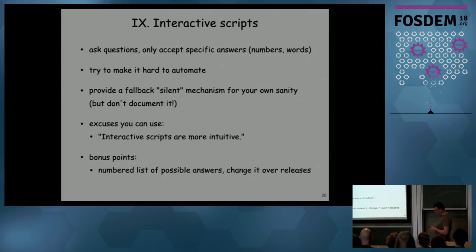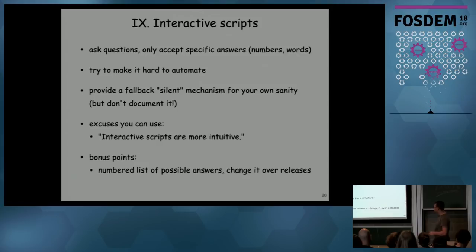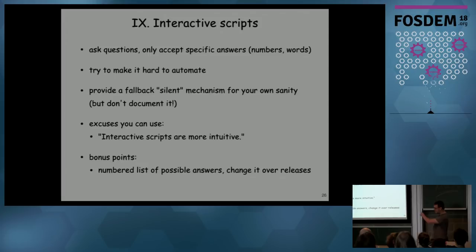Interactive scripts are a good way to annoy people: have a configure script that asks questions you have to answer with specific words like 'yes' or 'no,' or give a numbered list of options — make people pick a number, then ask another question. Try to make it as hard as possible to automate. You probably do want a fallback silent mechanism because this will drive you nuts — but don't put it in the documentation, because then they can do it too. Bonus points: if you give a numbered list of possible answers, change the numbers between releases. WRF does exactly this.